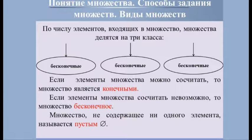Множество, не содержащее ни одного элемента, называется пустым. Например, множество действительных корней уравнения x² + 1 = 0, множество людей, проживающих на Солнце, или множество треугольников, сумма углов которых не равна 180 градусам.